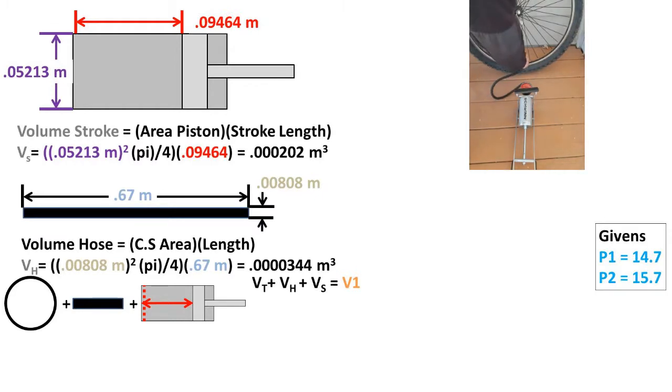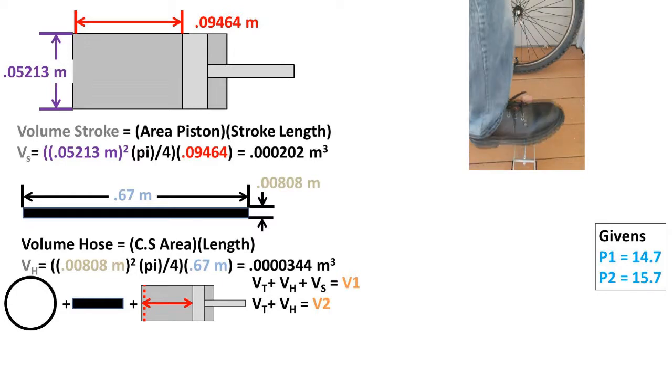Now we must find the volume of the initial state, or volume 1, in our example. We can take the volume of the tire plus the volume of the hose plus the volume of the stroke length to get volume 1. Next, to get the final state, or volume 2, we can take the volume of the tire plus the volume of the hose to get volume 2.